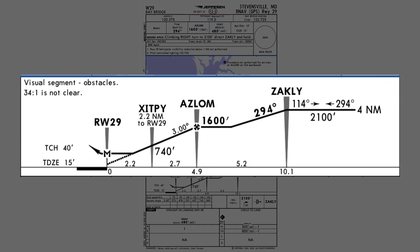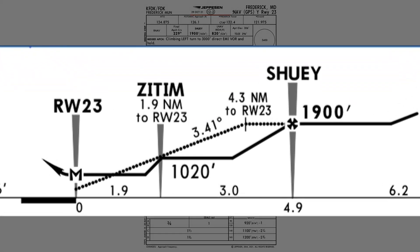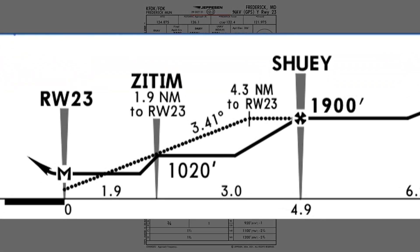But what if the altitude restriction at ZITP was higher than 740 feet? We wouldn't be able to use a single continuous angle from the final approach fix all the way down without busting minimums. When this is the case — such as here on the RNAV into Runway 23 at Frederick — notice the final approach fix is at Shuey, but the dotted line of the advisory glide path doesn't begin there, but at a point 4.3 miles from the runway, and it's steeper than the normal 3 degrees.